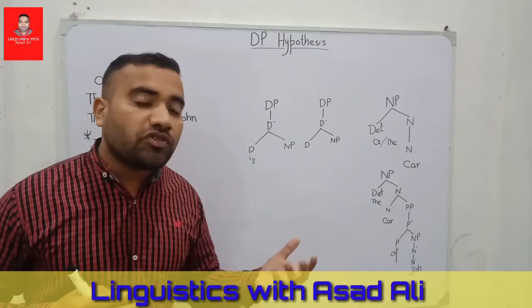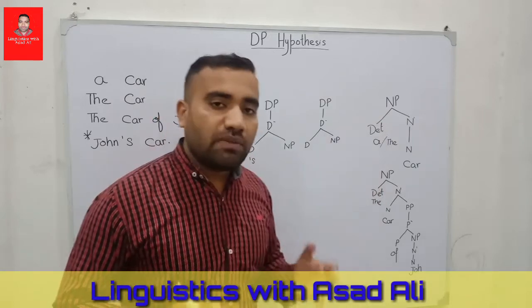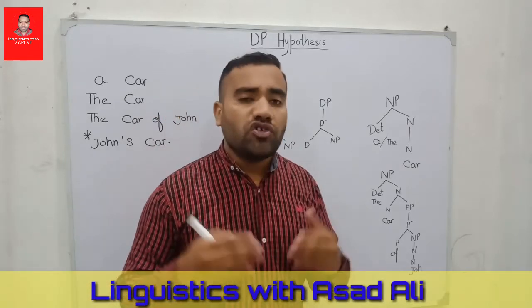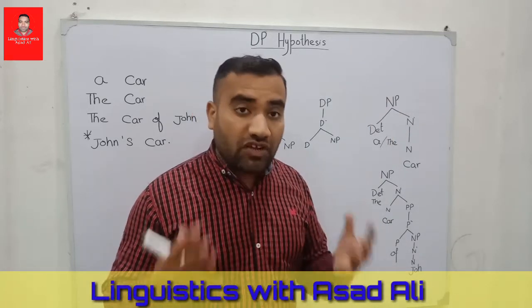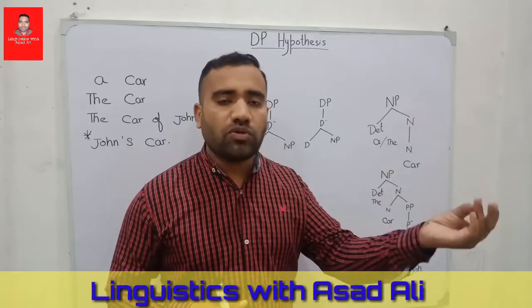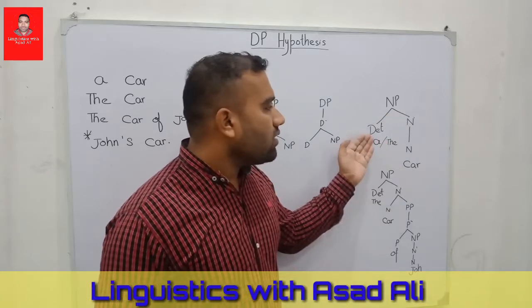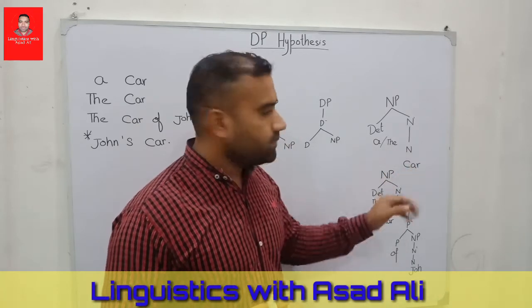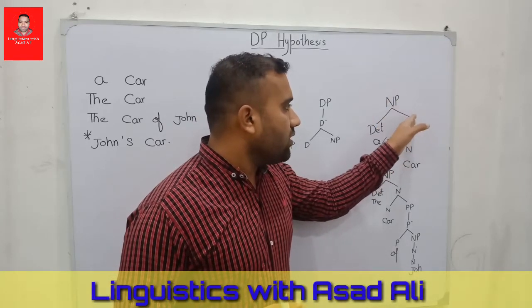First of all, let us revisit the previous structure of NP. This is the structure of NP that was developed within our previous videos. If you don't know what the structure of lexical categories is, you can click the link and learn about the structure of grammatical categories. There are five types of grammatical categories: nouns, verbs, adjectives, and prepositions. Consider the example 'a car' or 'the car'.